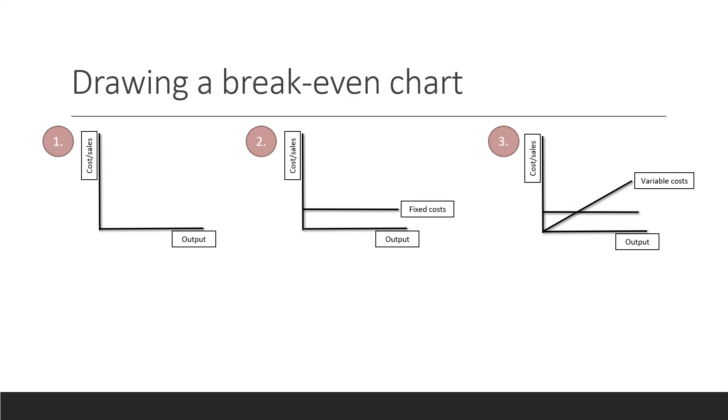Now the second step, you need to draw your fixed cost line. Remember, this stays the same regardless of the amount of output. Therefore, it's just a horizontal straight line.